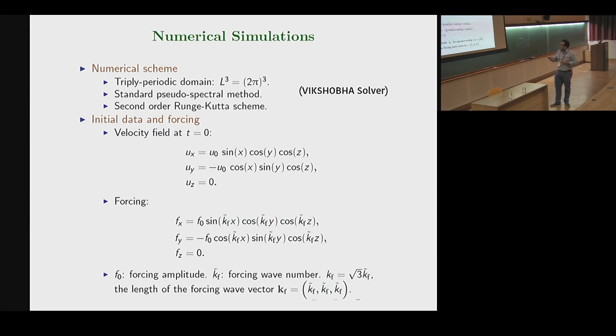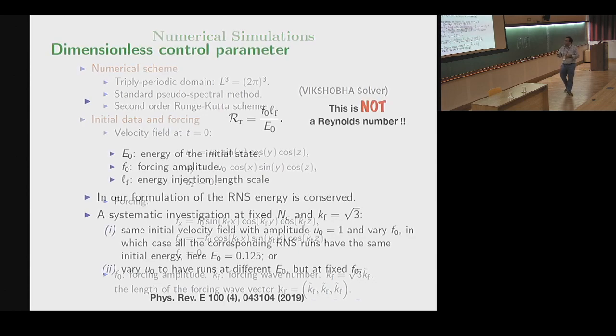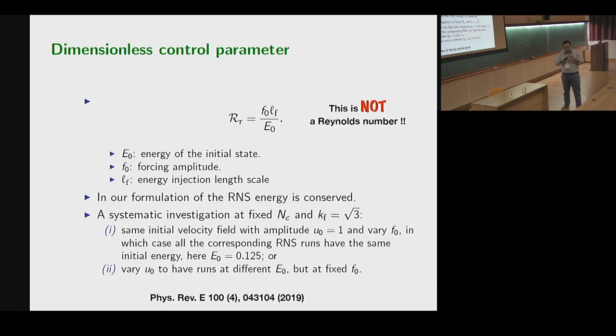You can choose initial data and forcing. So you already have one parameter u-naught, and another parameter f-naught. Let's say you have given free parameters in your problem, and you would like to construct some dimensionless control parameter. We make use of the forcing amplitude, energy injection length scale, and the total energy, kinetic energy, which is constant in the system, and out of it construct a parameter, which is non-negative. This actually quantifies the balance between the fluctuation of the kinetic energy at the injection length scale and the total energy of the system. And just to remind you, this is not a Reynolds number or inverse thereof.